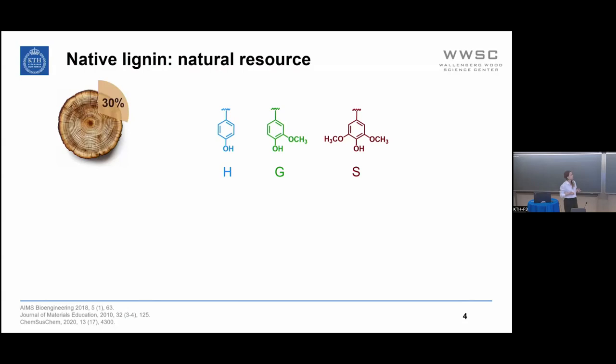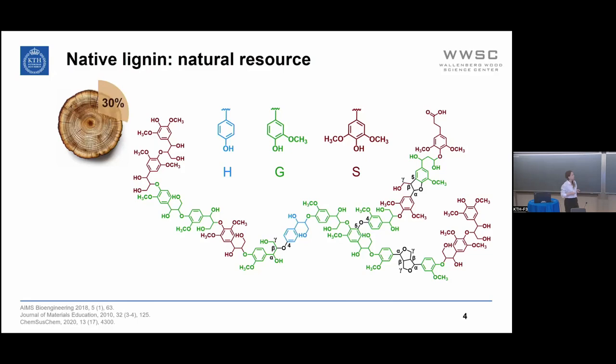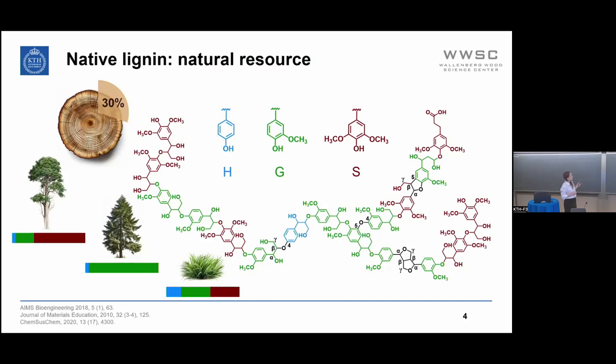These three monolignols can combine in different ways. Here you can see a possible lignin structure, and we see that the repeating units can be connected to each other — for example, through beta-O-4 linkages, 4-O-5, beta-beta, or beta-5 linkages. The lignin composition will vary a lot depending on the distribution of these monolignols, so in different plant species we find different kinds of lignin.